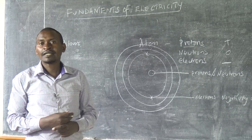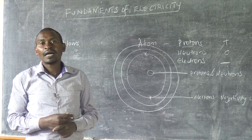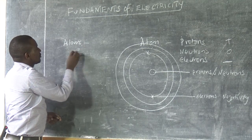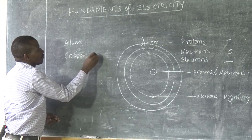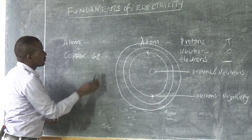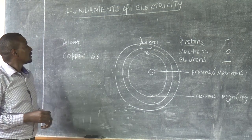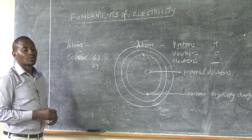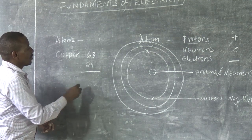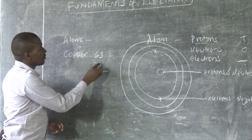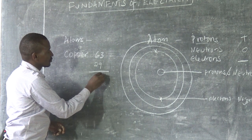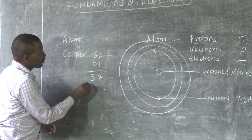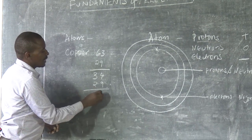The atomic number gives information on the number of protons and electrons. For example, copper. Copper has an atomic mass of 63 and an atomic number of 29. When you subtract, you get that the neutrons are 34 and the protons are 29, giving 5 neutrons.